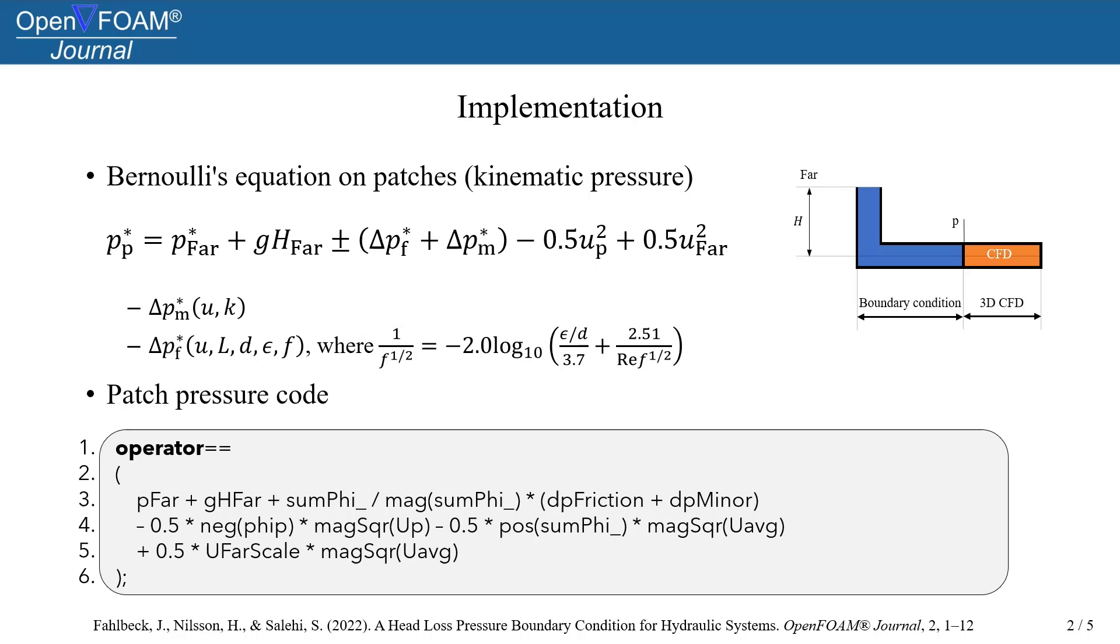This piece of code shows how the pressure is calculated at the patch. We can see at line 3 that the static pressure far in the hydraulic system is added, followed by the hydrostatic pressure. And then the head losses are either added or subtracted, depending on if it's an inflow or an outflow patch. We can see at line 4 how the kinematic pressure at the patch is subtracted.